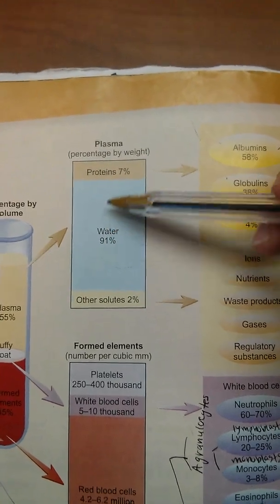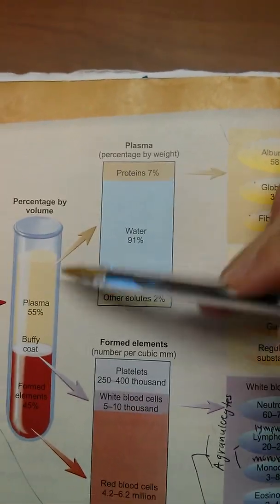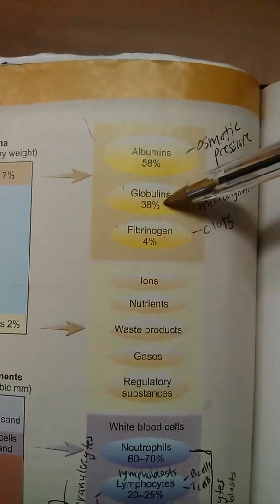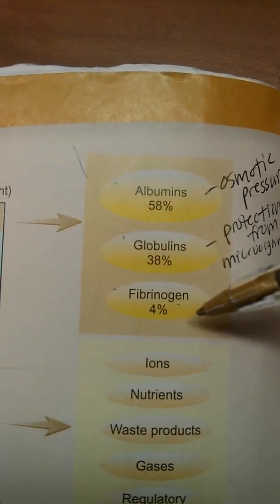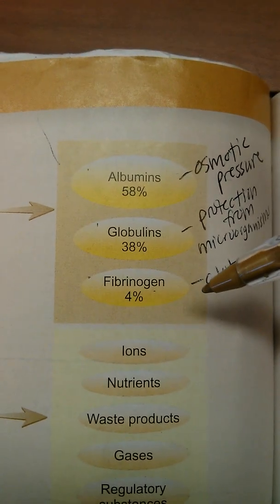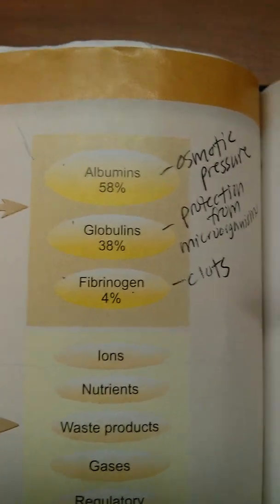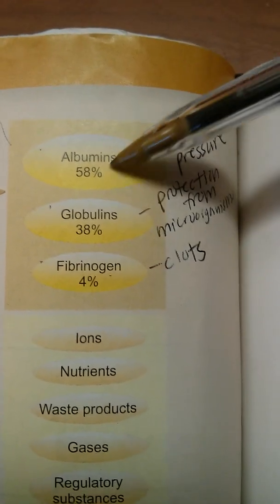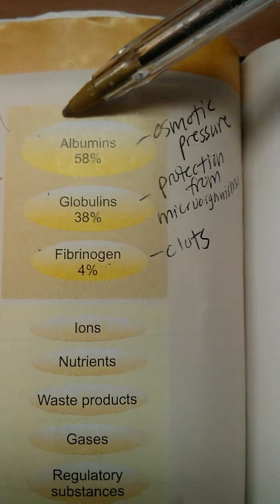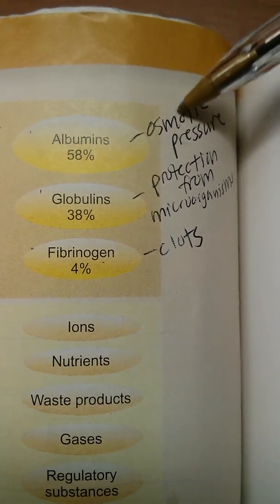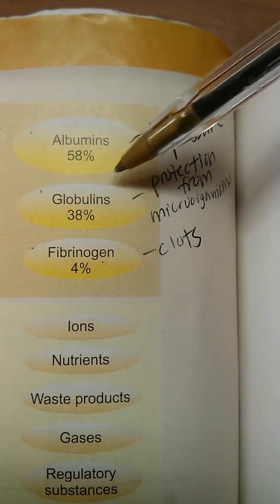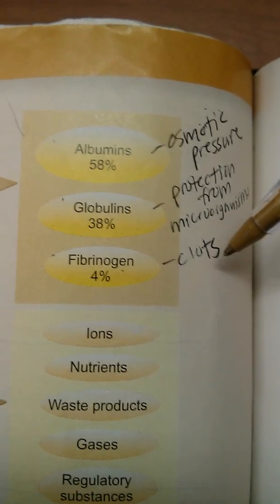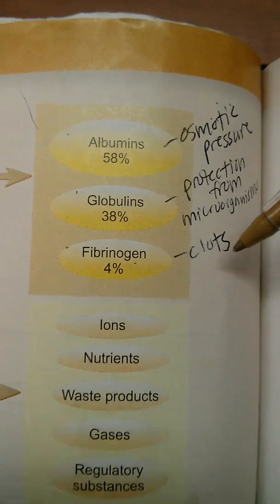The only other important component is that there are some proteins in this plasma. These proteins are albumin, globulin, and fibrinogen. This will be important for a test or later in the chapter. Albumin's job is to regulate osmotic pressure. Globulins protect from microorganisms. And fibrinogen helps with clots, as we will learn about a little bit later.